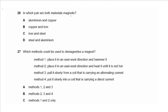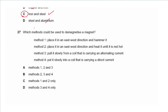Question 26 asks in which pair are both materials magnetic. Not aluminium, not copper — iron and steel are both magnetic, aluminium is not magnetic. So the answer is C.